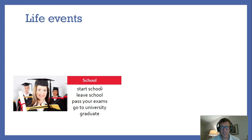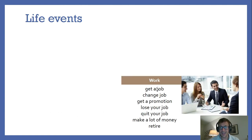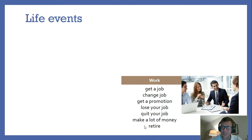For school: start school, leave school, pass your exams, go to university, and graduate. For work: get a job, change job, get a promotion — meaning go to a higher job — lose your job, quit your job. These are slightly different: lose your job means someone tells you to go; quit your job means it's your choice to go. Then make a lot of money and retire — this is what happens when you grow older, you have enough money and you stop working.